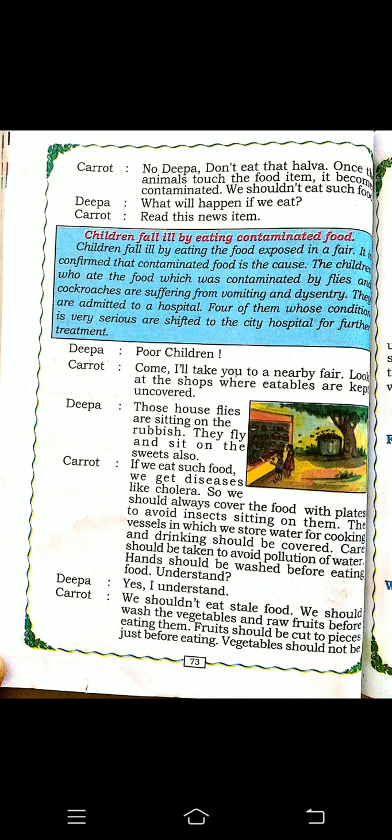Deepa says poor children. Carrot says come, I will take you to the nearby fair. Look at the shops where eatables are kept uncovered. House flies sit on rubbish, then fly and sit on sweets too. If we eat such food, we get diseases like cholera. We should always cover food with plates to avoid insects sitting on them. Vessels used to store drinking water should also be covered. Hands should be washed before eating food.